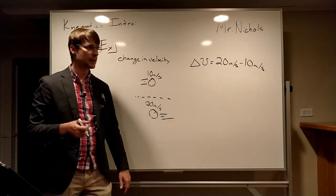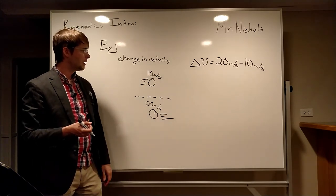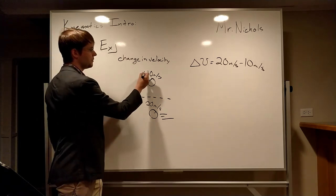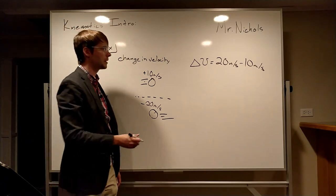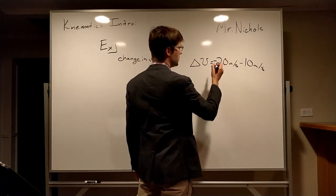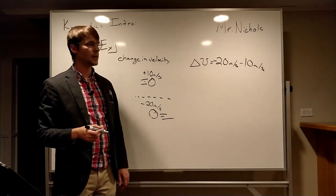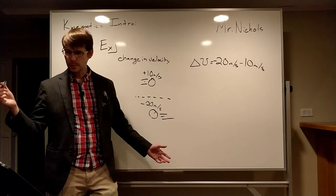So this actually is a change of 30 meters per second in the left direction in this case. So the way we can do this again, if you pay attention to positives and negatives, it doesn't really matter which way you say is positive. So we'll say maybe to the right is positive just to be conventional about it. So this is our initial velocity is equal to positive 10 meters per second and our final velocity would be negative 20 meters per second. Then we would get negative 30 meters per second is our total change in velocity.